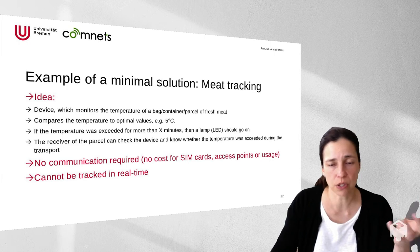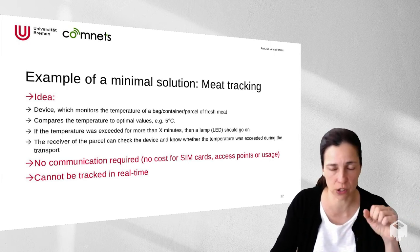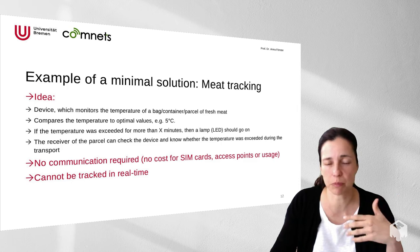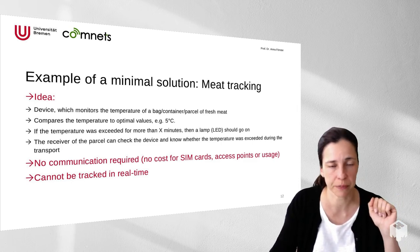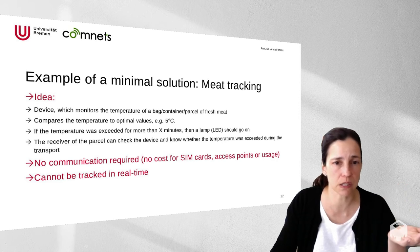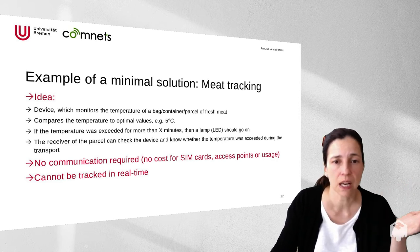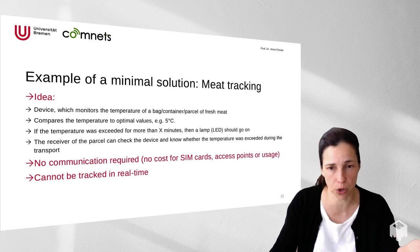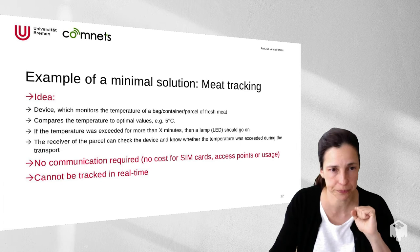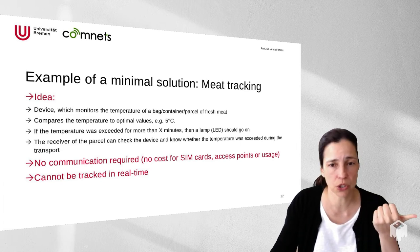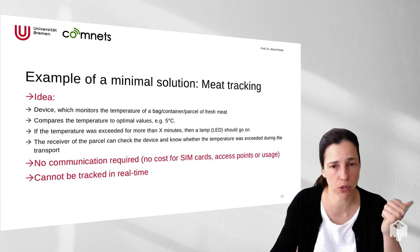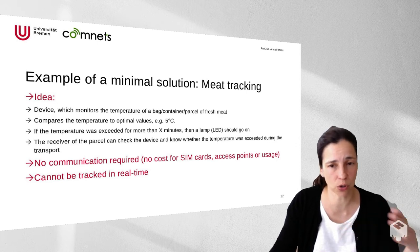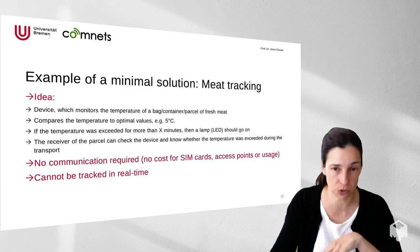The idea is that a device monitors the temperature of the meat parcel and always compares it to an optimal value — for example, it should always be below 5 degrees Celsius to be safe. If the temperature exceeds this threshold for some time, say 30 minutes, then an LED on the device itself signals that there is potentially a problem and the receiver should be careful. There is no communication required here — no SIM cards, no access points, no gateways, no service providers, no contracts — though you cannot track the meat in real time.